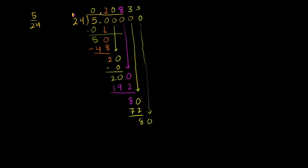So 5 over 24. I want you to understand why it keeps repeating. Every time we do this now, we're going to get a 3 and come down, get a 72. 80 minus 72, we're going to get another 80. And we're just going to have a big string of 3's there. So 5 divided by 24 is 0.2083 repeating.